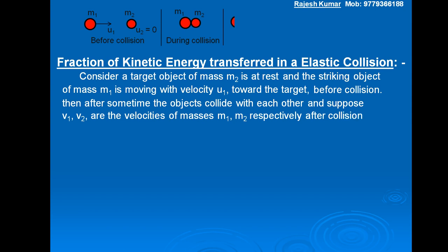After collision, the object of mass M1 is moving with velocity V1, and the target object of mass M2 is moving with velocity V2. Also after collision, V2 is always greater than V1.